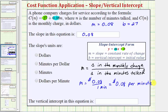Each additional minute costs an additional 0.08 dollars or eight cents. So for the second part, the slope's units are dollars per minute.